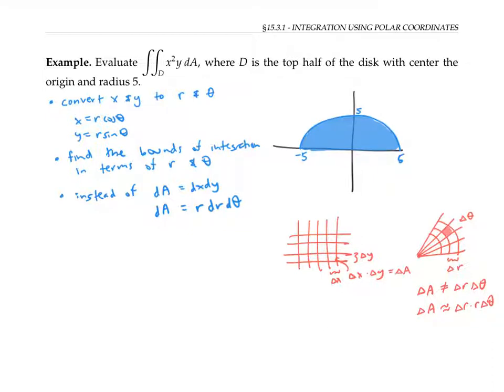That's because these side lengths here are approximately equal to delta r. But these side lengths here are approximately equal to r delta theta, because to get the arc length along a circle, you multiply the angular displacement by the radius.